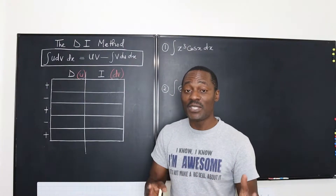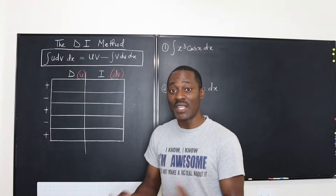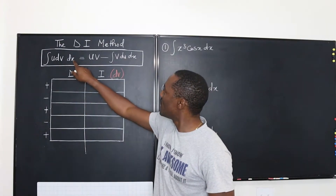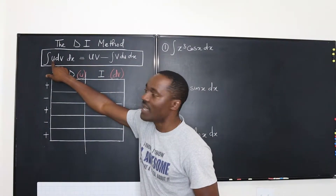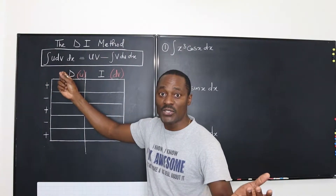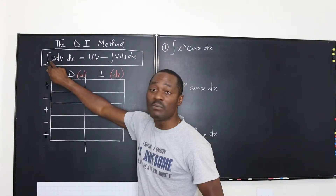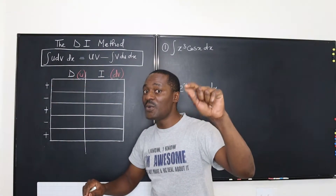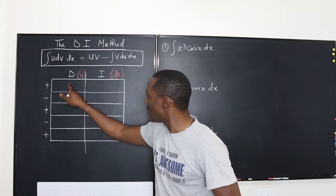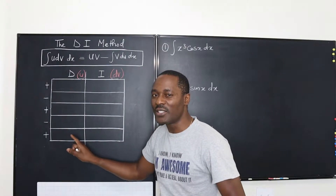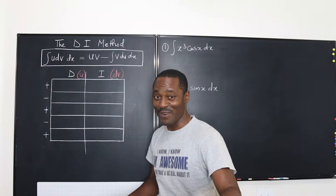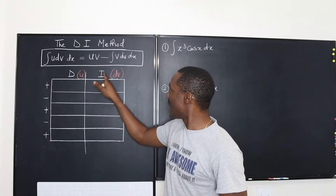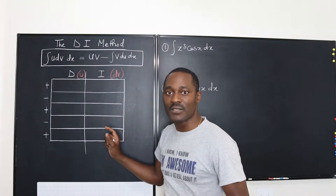The D stands for differentiate and the I stands for integrate. You're going to pick two things which are our U and the V. You're going to transform whatever question you have — one of the components will be U and the other will be the V. What you do to U is differentiate — you put the U here and keep differentiating until you find the answer. And you put your dV here and keep integrating until you find the answer.